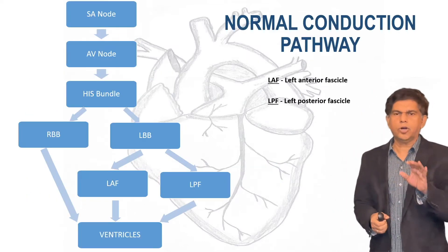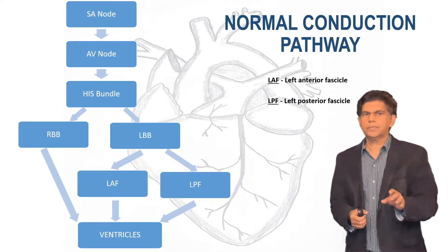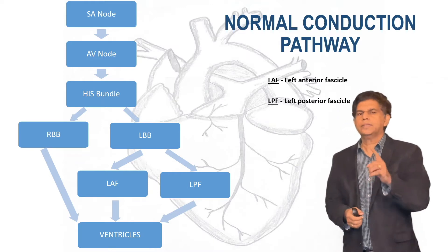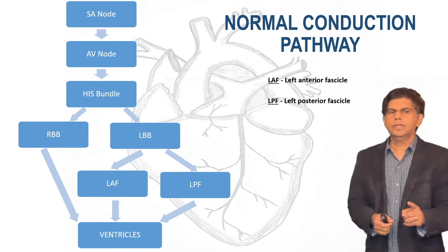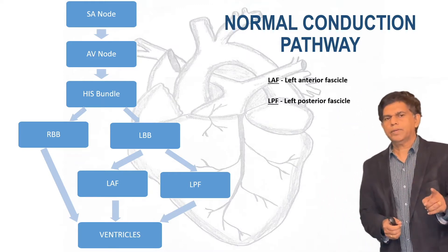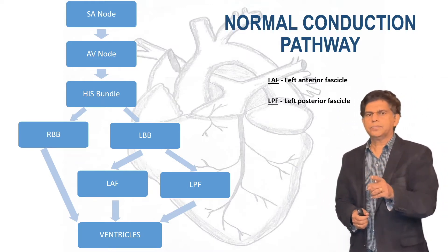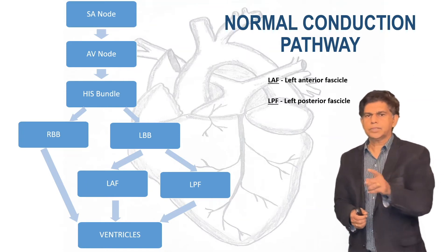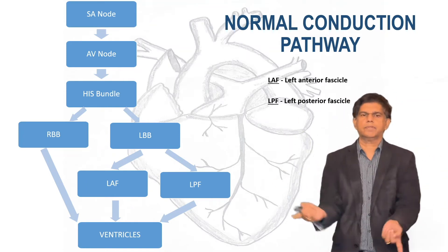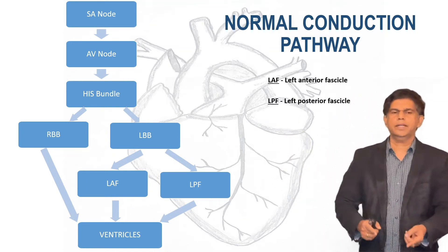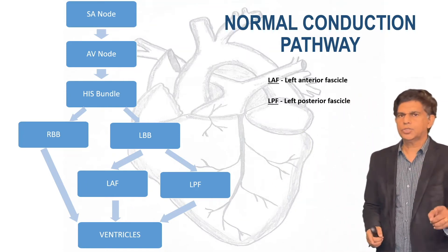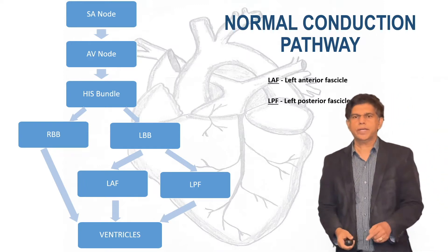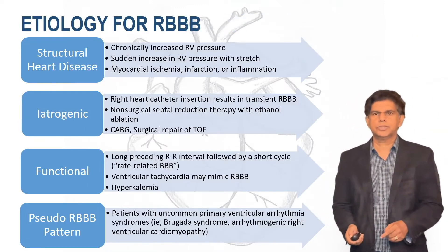Let's look at the normal conduction pathway. We have the SA node, signals going to the AV node, then the His bundle, then going to the right bundle, then the left bundle branch, left anterior fascicle, left posterior fascicle, and then covering the ventricle. In right bundle branch block, the block is located at the right bundle branch.